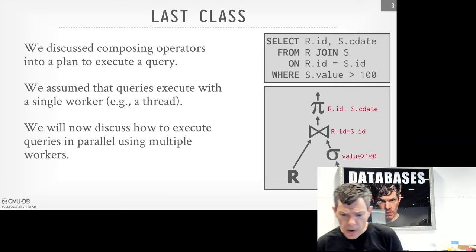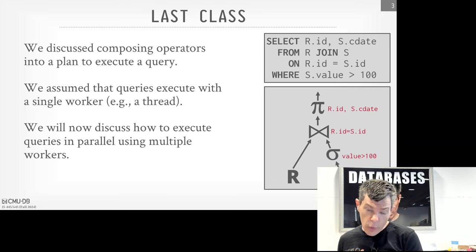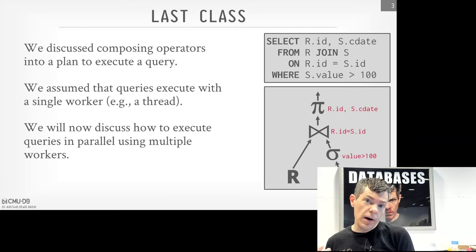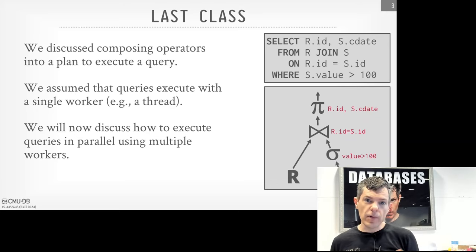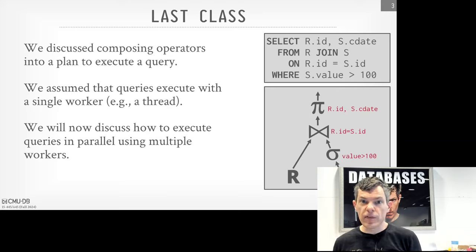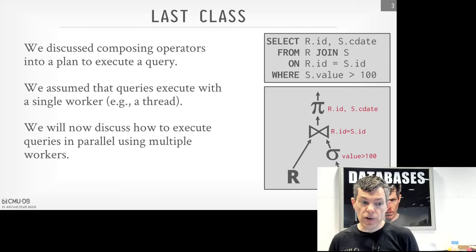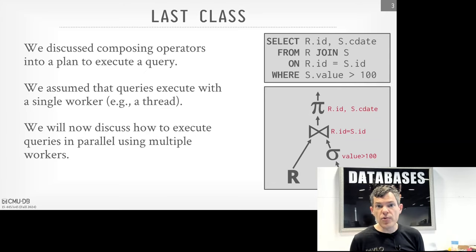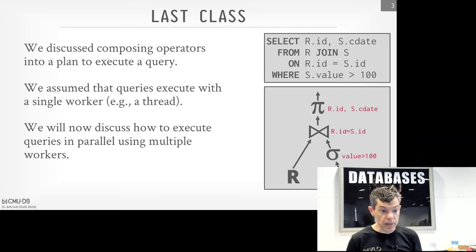In today's lecture, I'm going to try to use the word worker and not thread or process, because a worker is a higher-level computational component of the system, which could be a process, could be a thread, or could be a combination of them. But when I say thread or process, think worker, unless I'm explicit about it.